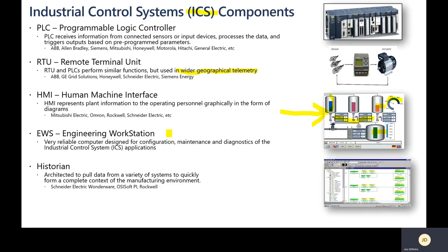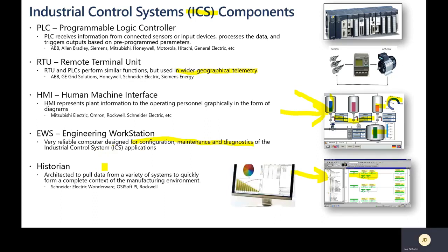Next, we have the engineering workstation, or EWS. The engineering workstation is used to design, configure, and maintain diagnostics of the ICS application. You may hear the term ladder logic — the engineering workstation controls the PLC by providing ladder logic to tell a tank when to open a valve to add water or coolant, for example. Then the historian provides all data in context of historical values, used to improve process control and understand what systems were working properly. Vendors with historians include Schneider Electric, Wonderware, OSIsoft, and Rockwell.